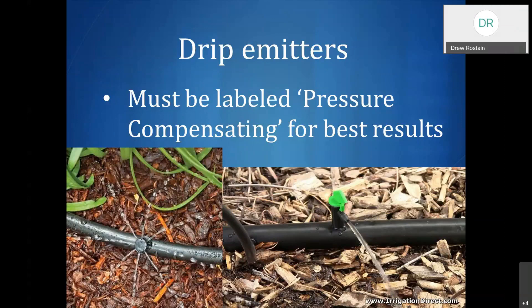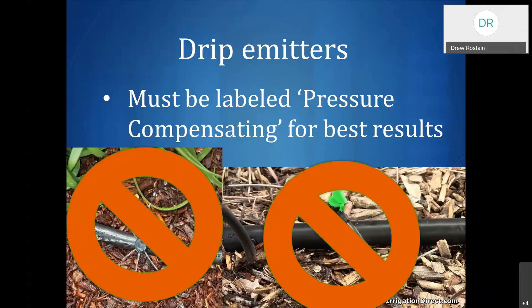The adjustable bubblers on the left can work okay for a veggie garden or a pot. But generally in our area they put out water a little bit too quickly for our soil, so it ends up flooding and you get runoff. They're also notoriously difficult to manage and they tend to clog up.